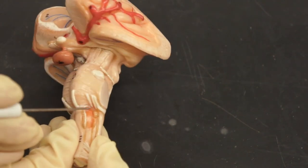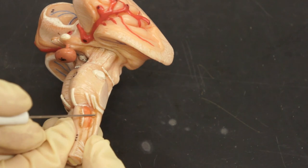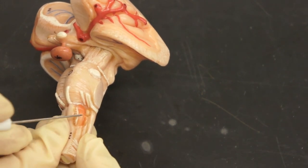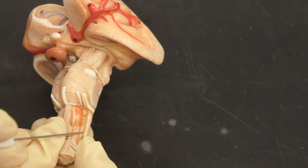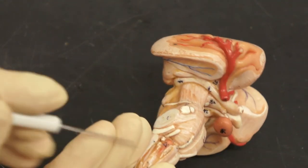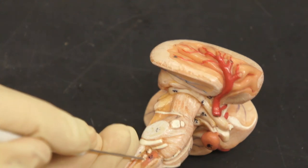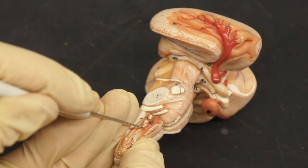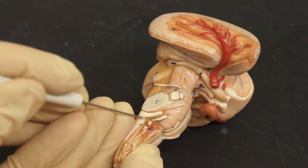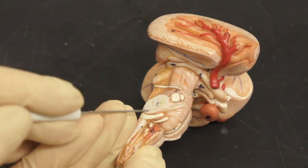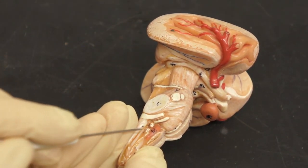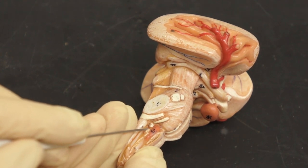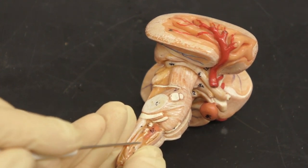And then here we have glossopharyngeal nerve nine. And below that we have vagus nerve ten. And then below that we have the accessory nerve, visible partially on this side, right here, this little bit. So again, we had glossopharyngeal nerve nine, vagus nerve ten, and accessory nerve eleven.